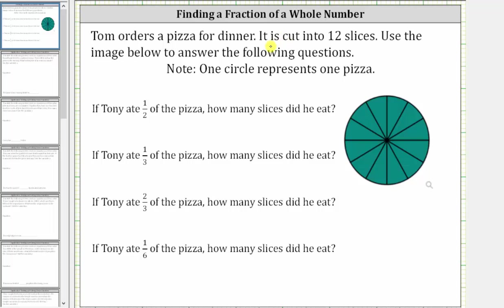Tony orders a pizza for dinner. It is cut into 12 equally sized slices. Use the image below to answer the following questions. Let's first number the 12 slices. Because 12 equally sized slices makes up one pizza, notice each slice is equal to 1/12 of the pizza.